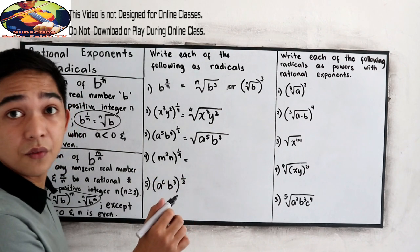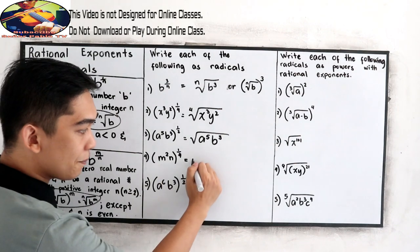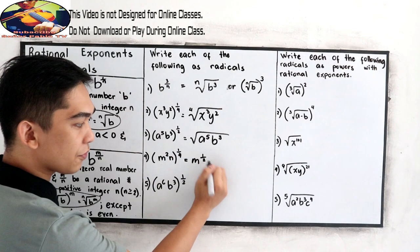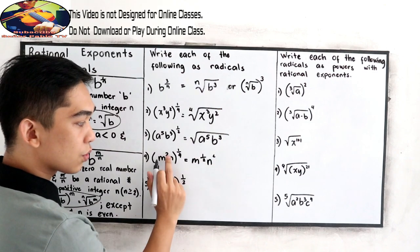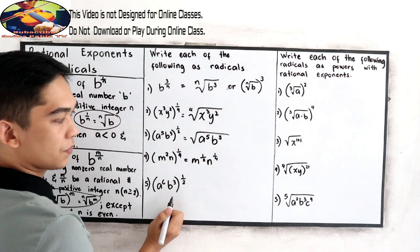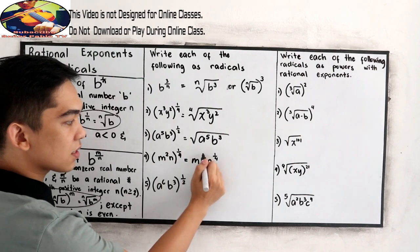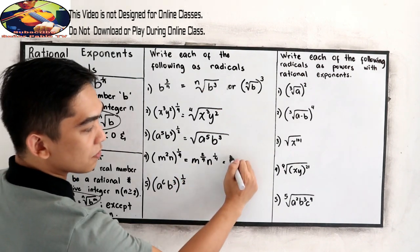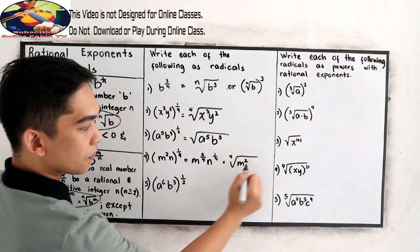In number 4, let us apply our laws of exponent. So here we have M, 2 times 1, that is 2 over 4. And N raised to 2 times N raised to 1 over 4. Now if we want to have the same denominator, we can write this as 2 over 4. So write in radical form, that is 4th root of M squared N.